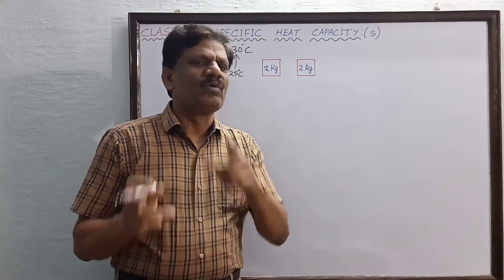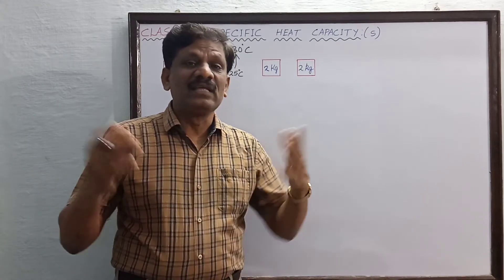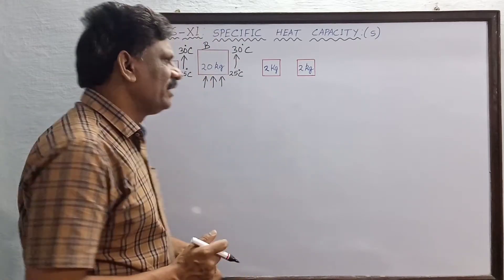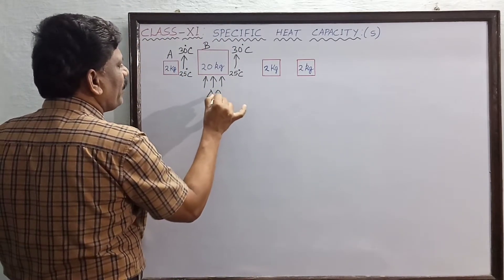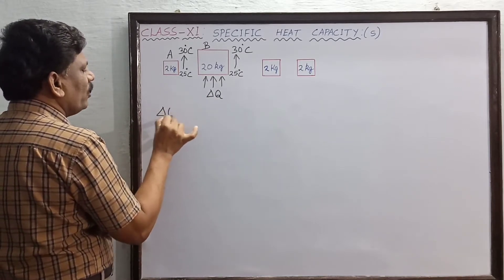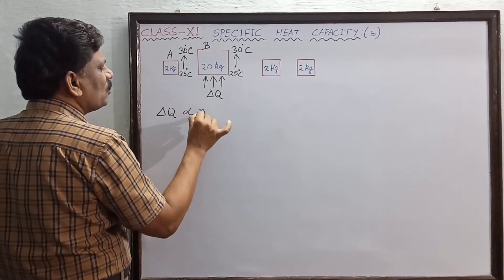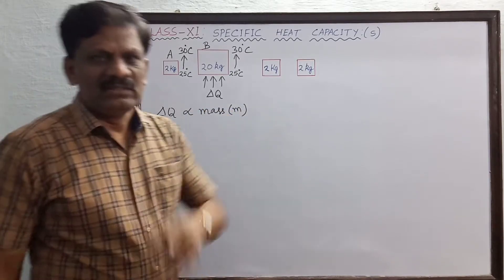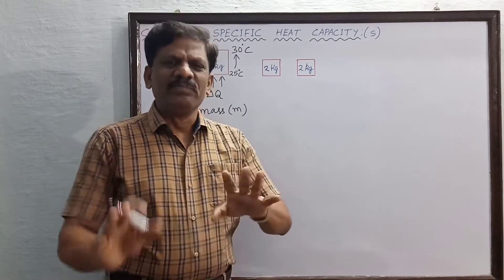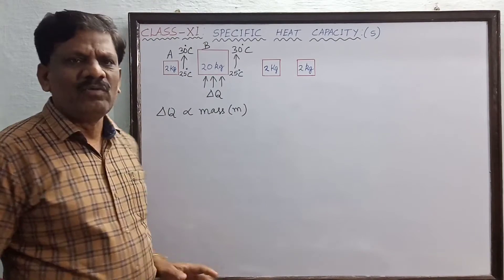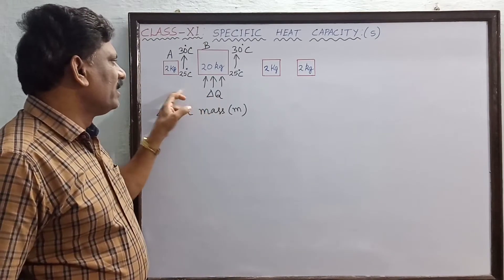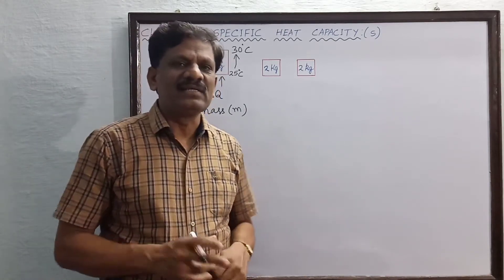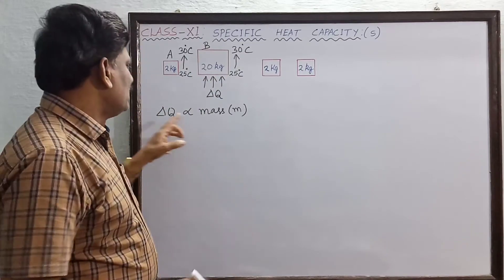If you supply the same quantity of heat to two different masses, the rise in temperature cannot be the same. So it is very clear that the quantity of heat supplied to the system — delta Q — is directly proportional to the mass of the system.